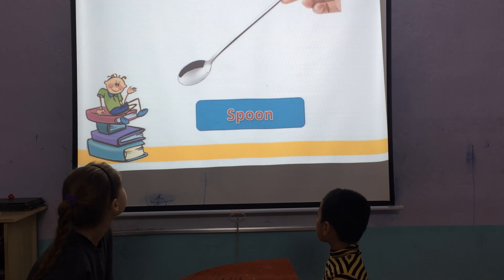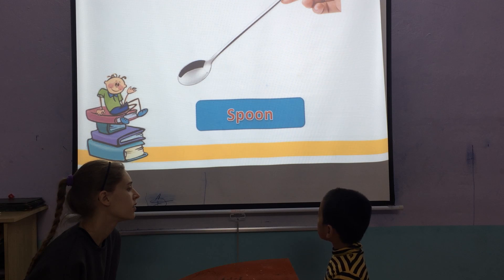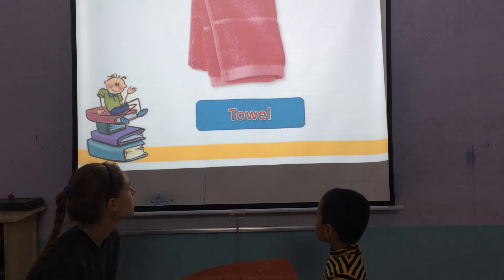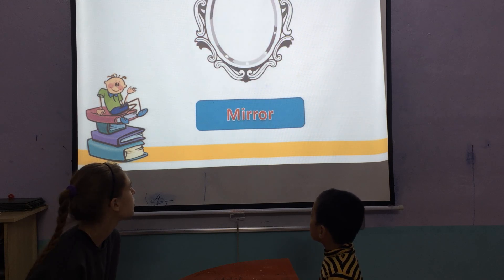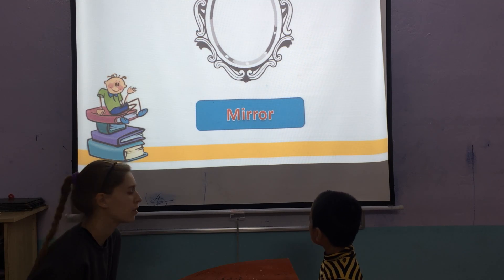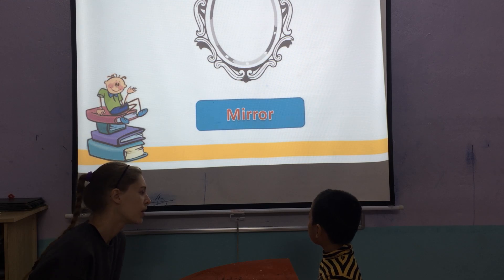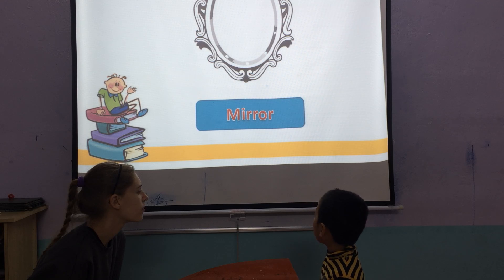Okay, what is it? Spoon. Spoon. This? It's a tower. Okay. This? It's a mirror. In which room can you see it? Where can you see? In there — in the bathroom.